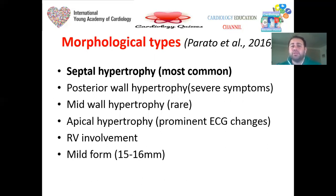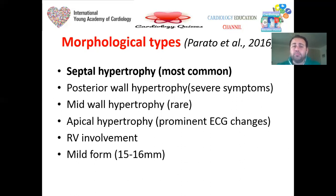We have many morphological classifications. The most recent, according to Parato et al. 2016, divided HCM into six types. The most common is septal hypertrophy, where the hypertrophied part is the septum. Other forms include posterior wall hypertrophy, characterized by severe symptoms; mid-wall hypertrophy, which is rare; apical hypertrophy, known with prominent T-wave inversions in precordial leads; RV involvement; and a mild form where LV wall thickness is mildly increased, in the range of 15 to 16 millimeters.